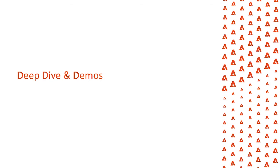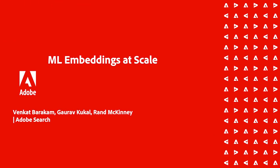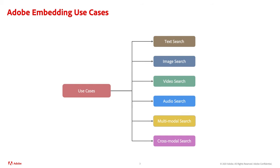Now we'll be looking at deep dives into the demos, as well as covering how we're using machine learning at scale. There are billions of assets in the Adobe Cloud, created with various Adobe tools. The assets are of many different types, each with its own representation and characteristics. This, along with the gap between low-level features and high-level semantic concepts, makes it difficult to search across different content types.